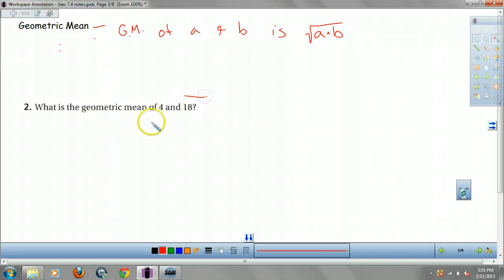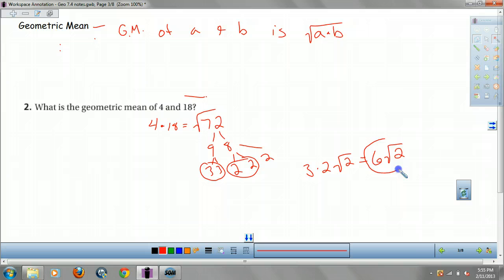So, for this beast, for geometric mean, we go 4 times 18. Which is 36, 72. And then we square root it. Which 72 breaks down to 9 and 8, which is 3, 3, 2, 2, 2. These guys get out alive. These guys get out alive. 3 times 2 square root 2, which is equal to 6 root 2. And that is my geometric mean. It's not that mean. It's kind of mean.